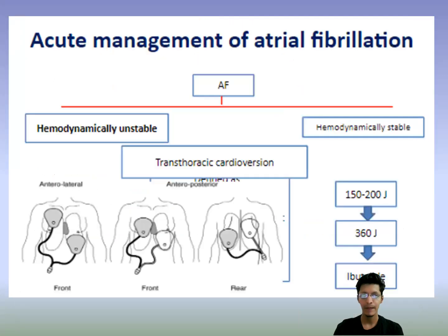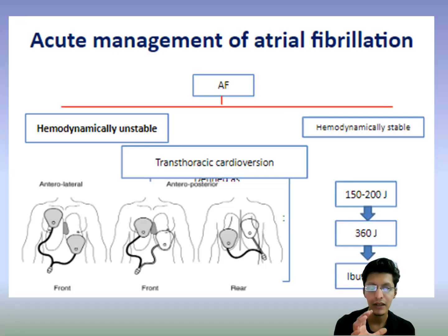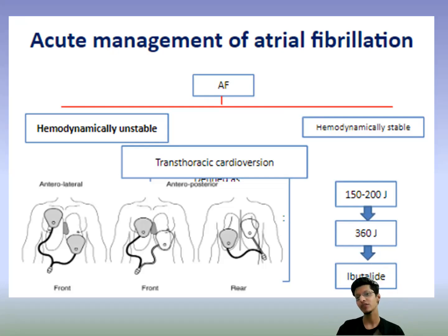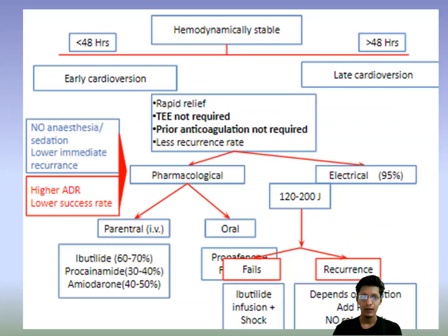For acute management of AF in the emergency setting: first determine if the patient is hemodynamically stable or unstable. If hemodynamically unstable, go directly for transthoracic cardioversion — place two pads anterolaterally and deliver a shock. Give around 50 to 200 joules initially; if not reverted, give 360 joules followed by ibutilide.